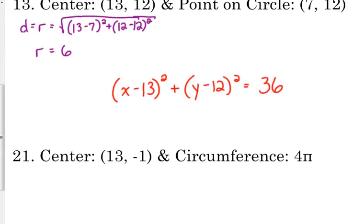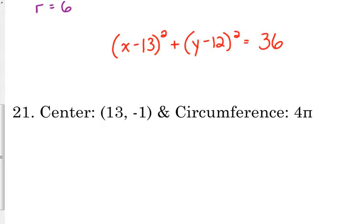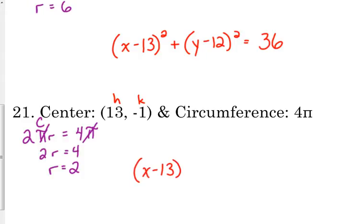The last one I want to show you is number 21. We're told the center and we're told the circumference. So any time we're writing the equation of a circle, we need the center HK, and we need the radius. Well, can the circumference give us the radius? Yeah. Circumference is what in terms of radius? 2 pi R is circumference in terms of the radius. So 2 pi R equals 4 pi. So that means 2R equals 4. Our radius is 2. So our equation here would be x minus 13 squared plus y plus 1 squared equals 2 squared, which is 4. So not really that complicated. Just you got to...